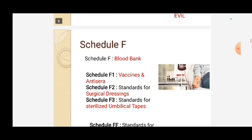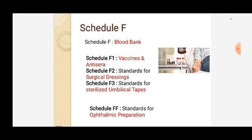Schedule F is very important — remember it for blood bank. Schedule F1 covers vaccines and antisera. Schedule F2 is standards for surgical dressing. Schedule F3 is the standard for sterilized umbilical tapes. Schedule FF (double F) is the standard for ophthalmic preparations — this is very important. Remember all the Schedule F sub-schedules.